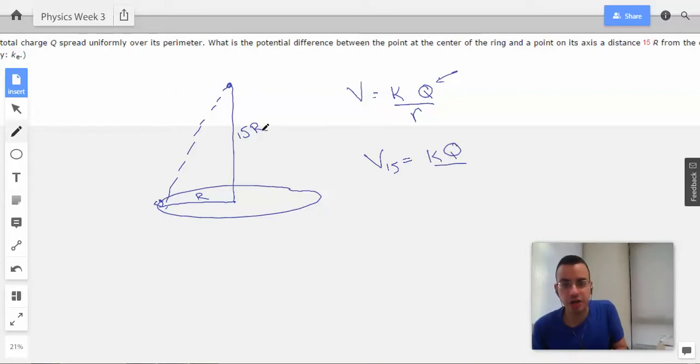So this R here is going to be 15R squared plus R squared, which will give us 16R squared. Then we need to square root that guy. Whoa, that's not going to give us 15R squared. 15²R², there we go.